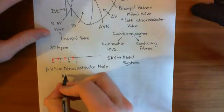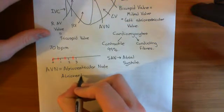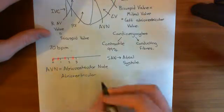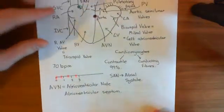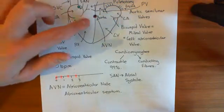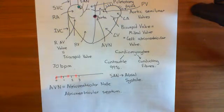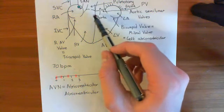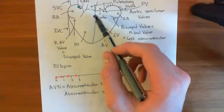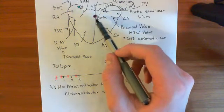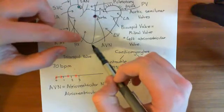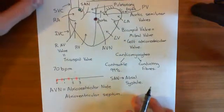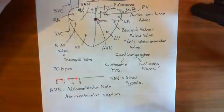The atrioventricular septum is the sheath of connective tissue which separates electrically the atrial cardiomyocytes from the ventricular cardiomyocytes, so that you don't just get propagation of the action potential from the atria to the ventricles. The AV node has some very special properties — it is extremely slow at conducting. This action potential basically takes absolutely ages to get from the atria to the ventricles through the AV node, so that all the blood has time to move from the atria into the ventricles before you trigger ventricular systole.